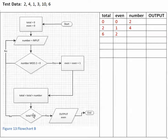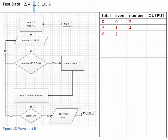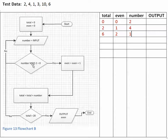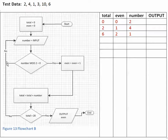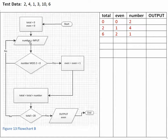We come down and ask: is total greater than 20? No, it is not. So we come back and input the next number, which is 1. Number is assigned the value of 1. We ask: is number mod 2 equal to 0? It's not equal to 0, so we come out this side and input the next number.